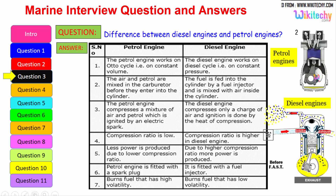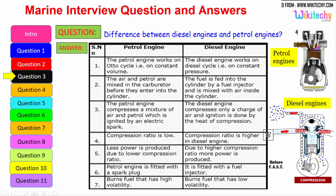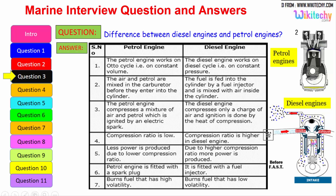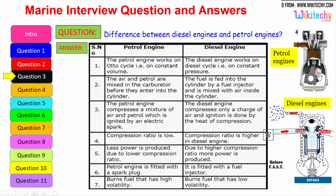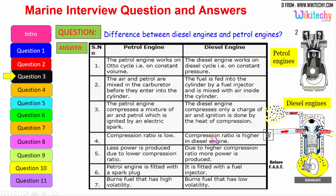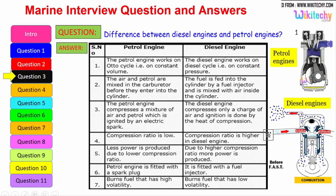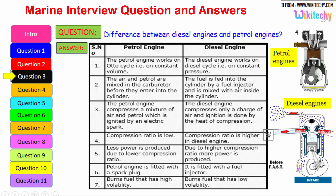The petrol engine compresses a mixture of air and petrol, which is ignited by an electrical spark. The diesel engine compresses only a charge of air, and ignition is done by the heat of compression. The compression ratio is low in the petrol engine, whereas the compression ratio is higher in the diesel engine. Less power is produced due to the lower compression ratio; a higher compression ratio produces more power.